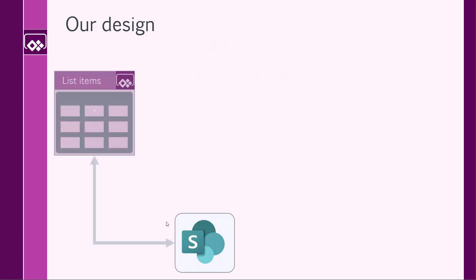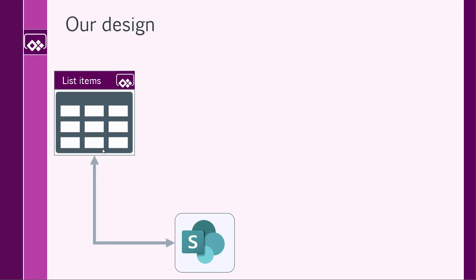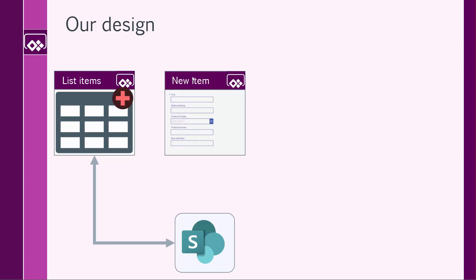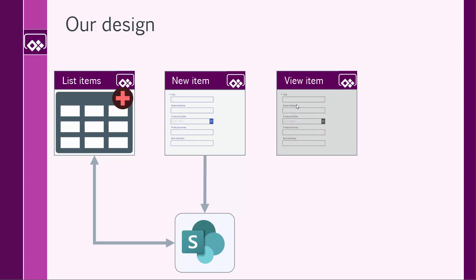We have SharePoint and a Power Apps gallery that shows the list items. The user can push a plus button and it takes them to the new screen where they can create a new item. When the user pushes save, the record goes inside SharePoint. At the same time, the user is redirected to another screen that shows the same values in view mode so they can review and submit.